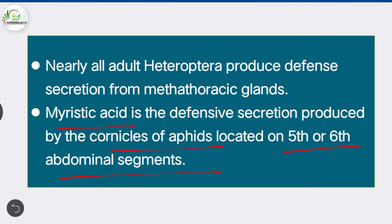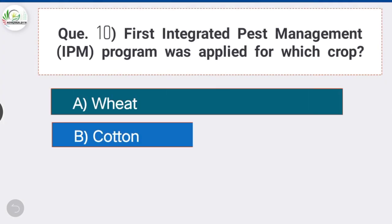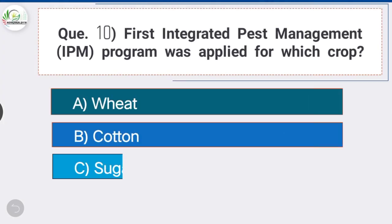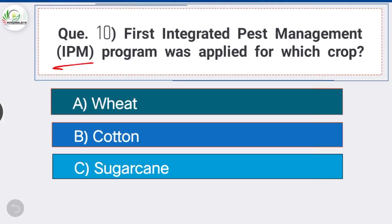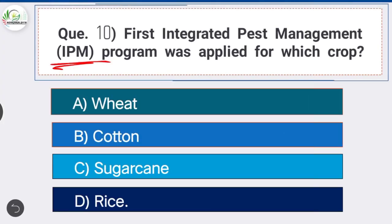Question 10: The first Integrated Pest Management (IPM) program was applied for which crop? Option D is the correct answer: rice. In 1975, the first IPM program was started with rice at the Central Rice Research Institute, Cuttack.